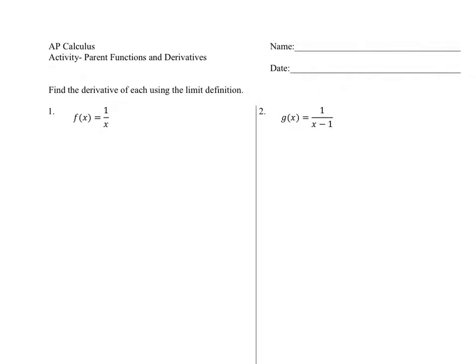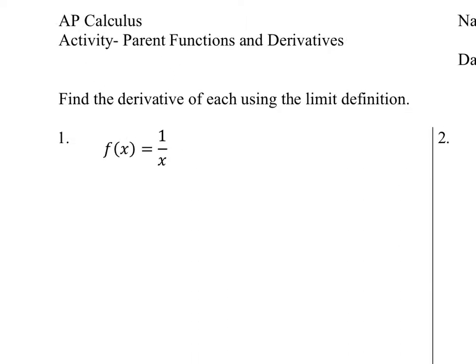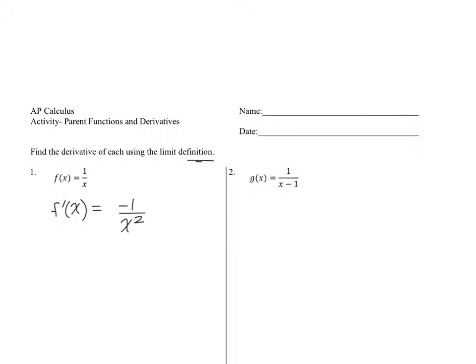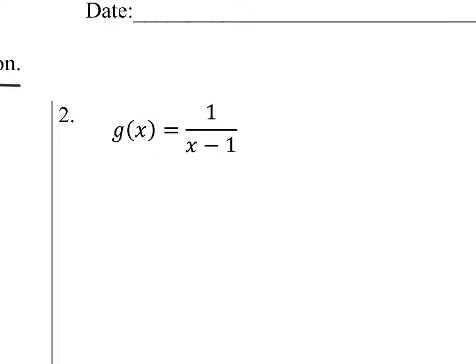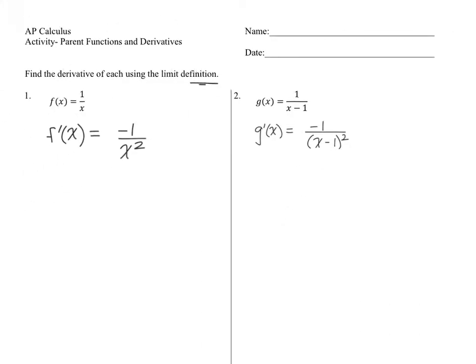After doing all the limit work for the first function, you ended up with an f prime of x of negative one over x squared. Right now, we're just concerned with the answer. Then we look at the other one, one over x minus one, and we find that derivative, which ended up being negative one over x minus one squared. So we have our two derivatives.